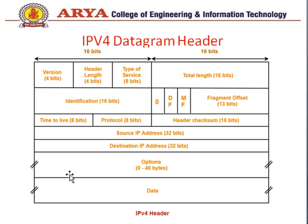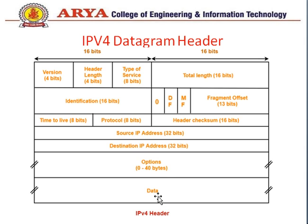Next we will discuss the IPv4 header. The header is extra information included before transmitting data to the next layer. The basic header consists of: version, header length, type of service, total length, identification, flag bits, fragment offset, time to live, protocol, header checksum, source IP address, destination address, options, and then the data.